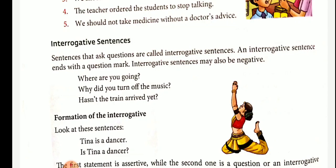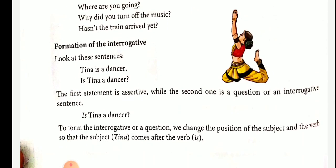Examples of interrogative sentences: Where are you going? Why did you turn off the music? Hasn't the train arrived yet? These are examples of interrogative sentences — two sentences are positive or affirmative, and one is negative.